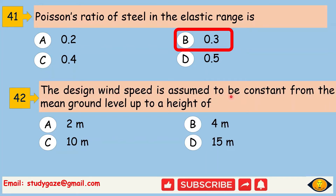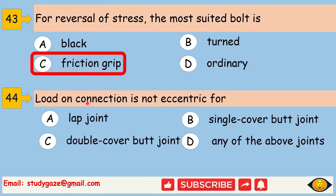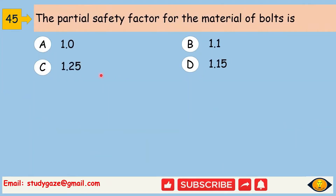The design wind speed is assumed to be constant from the mean ground level up to a height of 10 metres. Next, for reversal of stress, the most suitable bolt is a friction grip bolt. Next, load on connection is not eccentric for a double cover butt joint. Next, the partial safety factor for the material of bolt is 1.25.